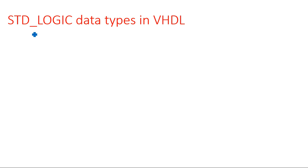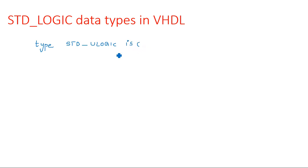There are nine values for std_logic. Those nine values are defined by the 'type' keyword, which is used to initialize all these std_logic values. The type is written as std_logic, or you can also write it as std_ulogic. The two hyphens shown indicate a comment — anything written after two hyphens is considered a comment in the VHDL language.